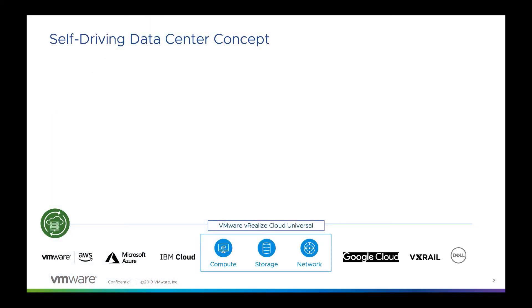The self-driving data center concept — if you look at the bottom layer, this represents your infrastructure layer where you're going to run your applications and workloads, whether they're going to be on-premises on Dell EMC virtual systems, VMware vSphere, or you might have a hybrid cloud approach with VMware-supported public clouds such as VMware Cloud on AWS, or native public clouds with AWS, Microsoft Azure, Google Cloud Platform, or IBM Cloud.